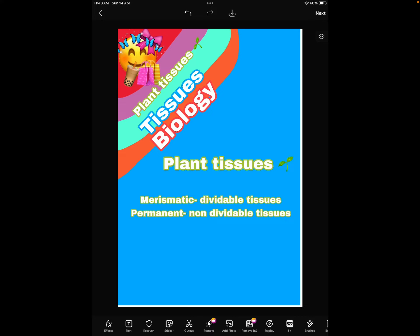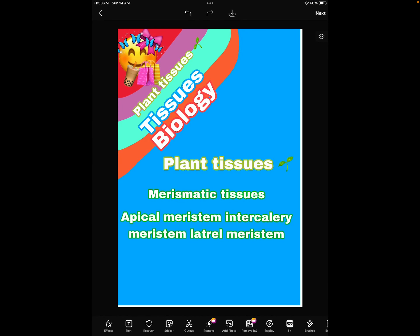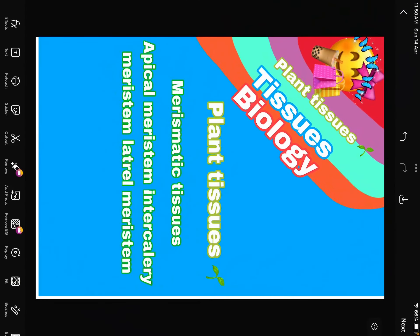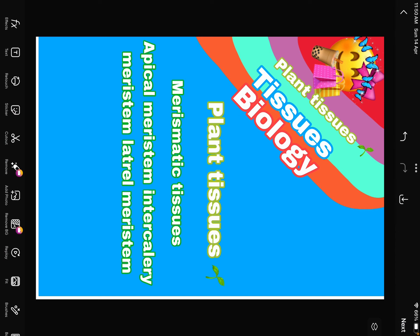Let's learn about meristematic tissues in this video. Meristematic tissues are divided into three parts: apical meristem tissue, intercalary meristem tissue, and lateral meristem tissue. But why are they called meristem tissue?